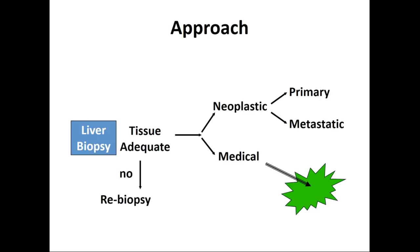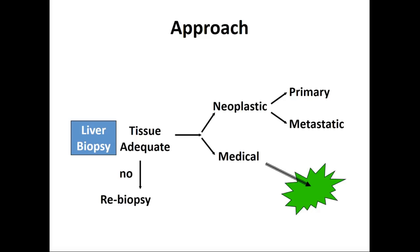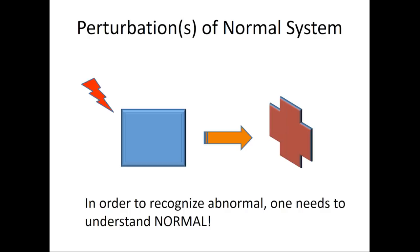Assuming one has an adequate liver biopsy, the next question is: is this a neoplastic or lesional process, or does this fall under the medical liver biopsy realm? Today, we will be concentrating on the medical liver biopsy. In order to understand how we can go about diagnosing abnormal, one has to appreciate what normal is. Once one understands normality, I will show how we can perturb each of the components of the liver to derive the subsequent perturbations of the system and work backwards to understand the possible etiologies of that liver disease.